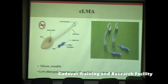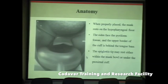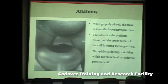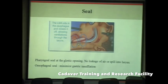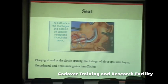The main disadvantage of the classic LMA is its low pharyngeal seal pressure of only around 20 cmH₂O, which increases the risk of aspiration. When properly placed, the mask rests on the hypopharyngeal floor, the sides face the piriform fossae, and the upper border of the cuff sits behind the tongue base. Two types of seals are formed: the pharyngeal seal, which seals the glottis to prevent air leakage into the larynx, and the esophageal seal, which minimizes gastric insufflation.